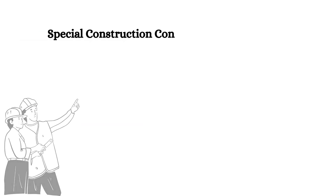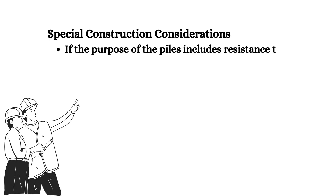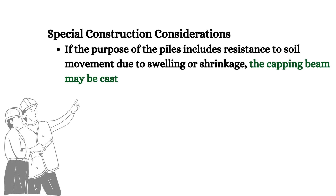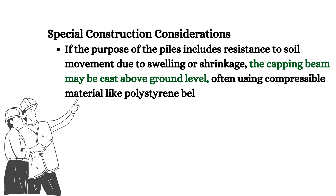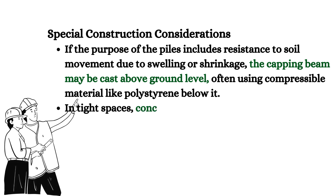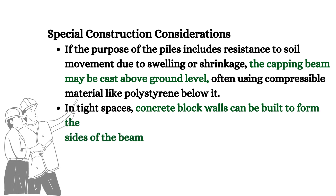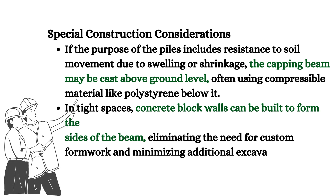Special construction considerations: If the purpose of the piles includes resistance to soil movement due to swelling or shrinkage, the capping beam may be cast above ground level, often using compressible material like polystyrene below it. This ensures the beam remains unaffected by ground heave. In tight spaces, concrete block walls can be built to form the sides of the beam, eliminating the need for custom formwork and minimizing additional excavation.